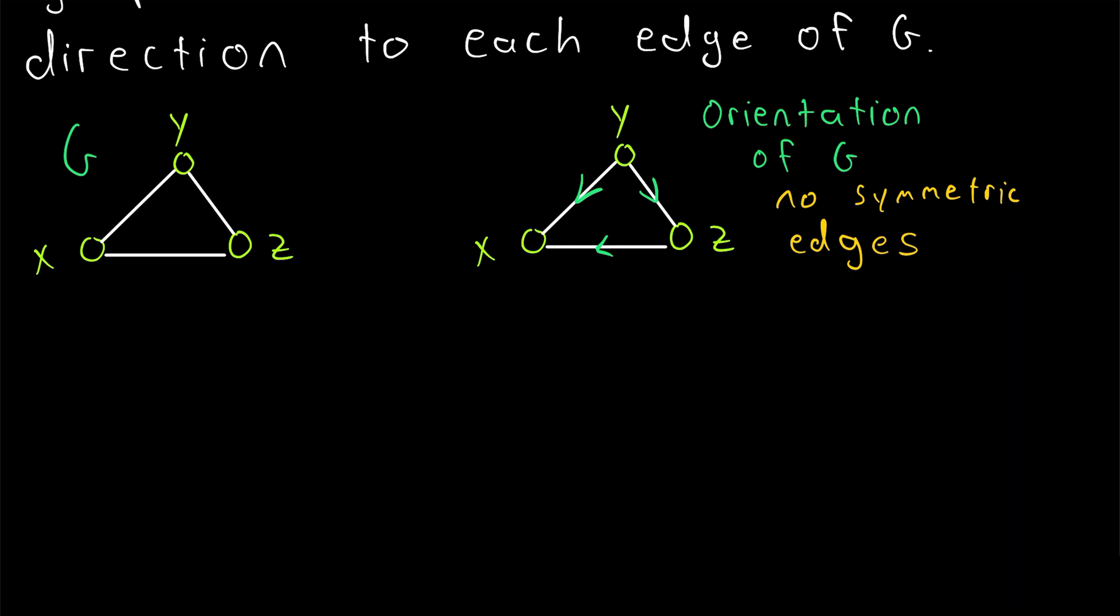And in my experience, when people talk about orientations of a graph, they're talking specifically about orientations of simple graphs. So multiple edges are not a possibility. So in an orientation of a graph, any time two vertices are adjacent, they'll only be adjacent in one direction.